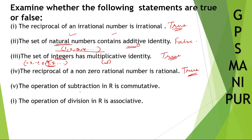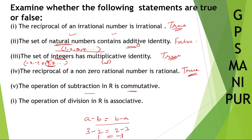The operation of subtraction in R is commutative. What does commutative mean? Commutative means A minus B is equal to B minus A. If these two are equal, then we can say it is commutative. So let A equal 3 and B equal 2. Then 3 minus 2 is 1, and 2 minus 3 is minus 1. These two are not equal. So we can say this is false.